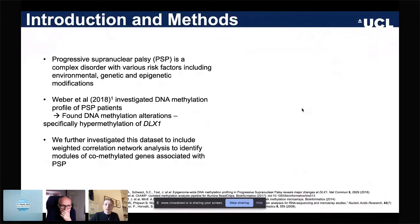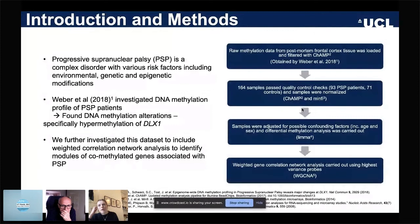A brief overview of our methodology is shown here. Firstly, we loaded the raw methylation data which had been obtained by Weber et al from post-mortem forebrain tissue, and we carried out various quality control assessments. After which we included 164 samples, 93 PSP patients and 71 controls, in our downstream analysis.